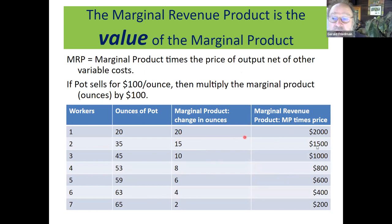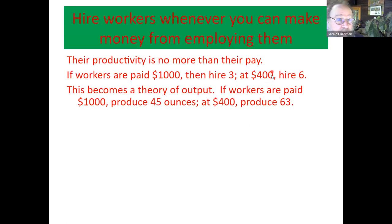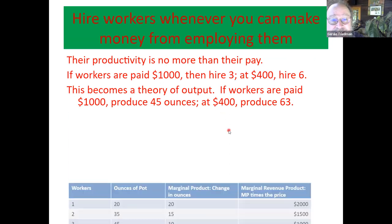$20 of output gives $2,000; two ounces of output only $200. How many workers do you hire? This is your demand curve for labor. Workers are paid $1,000 — you hire three. Workers are paid $400 — you hire six. Workers are paid $200 — you hire seven.